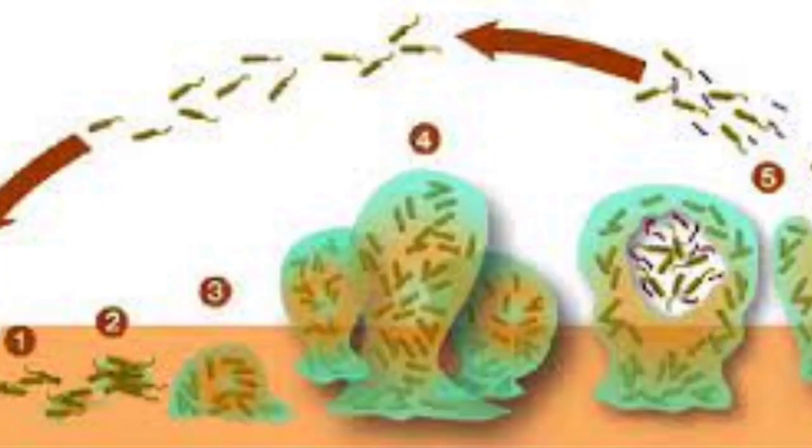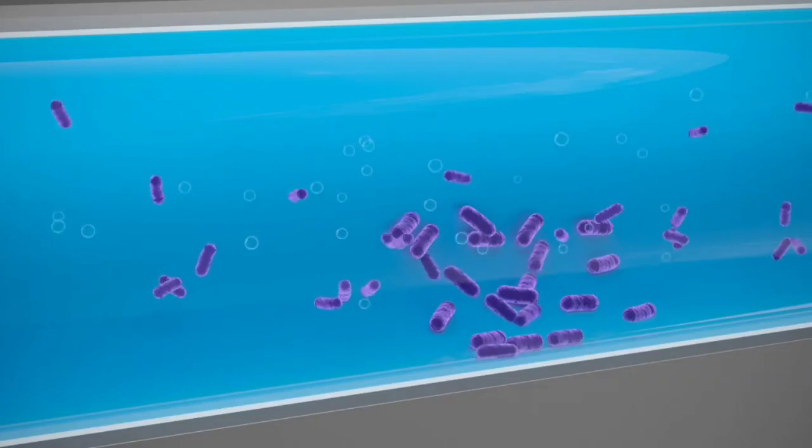Biofilm is defined as microorganisms irreversibly attached and growing on a solid surface, producing extracellular polymeric substances to entrap nutrients. More simply, biofilm is a community of interacting microorganisms embedded in a polymeric matrix adhered to food contact surfaces. Biofilm consists largely of water, polysaccharides, and glycoproteins forming the extracellular polymeric substance.